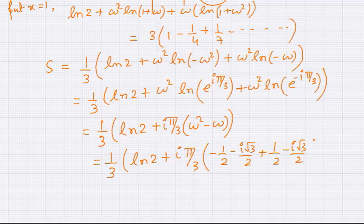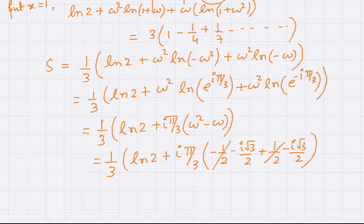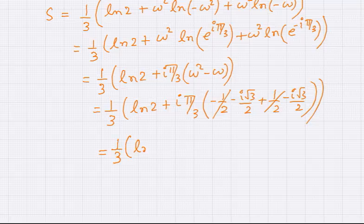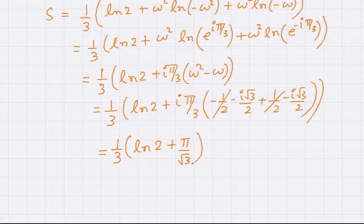ω² = -1/2 - i√3/2 and ω = -1/2 + i√3/2, so ω² - ω = -i√3. The iota multiplies with iota to give -1, yielding a purely real answer. The final answer for the series is (1/3)[ln 2 + π/√3].